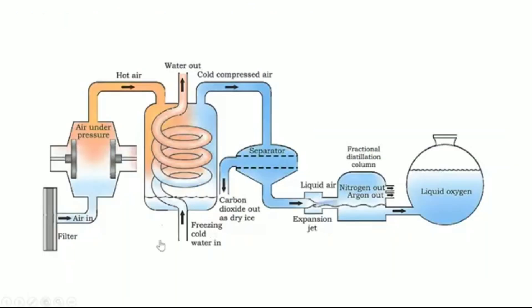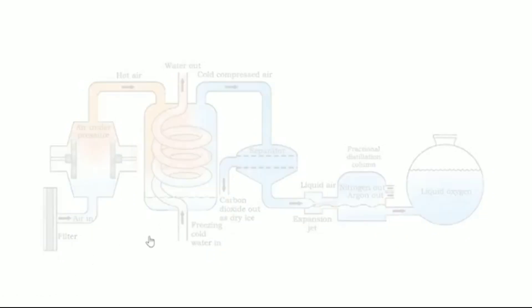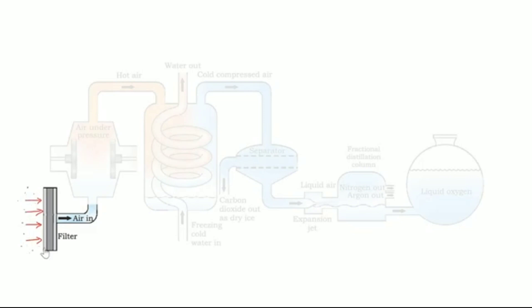Now let us understand how the different components or gases present in air are separated. First of all, the air is allowed to pass through a filter. This filter absorbs the moisture, that is water vapor, and also the dust particles present in air.